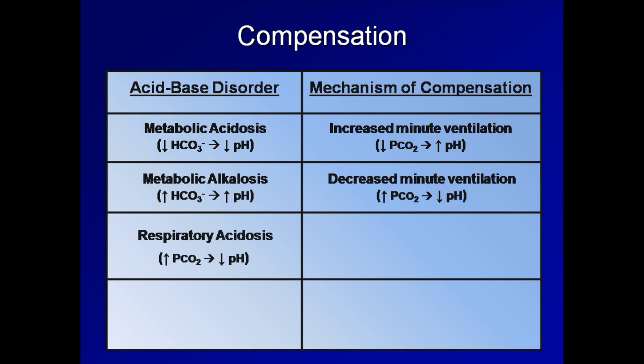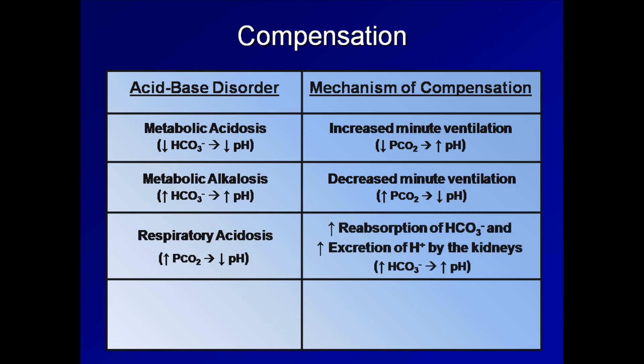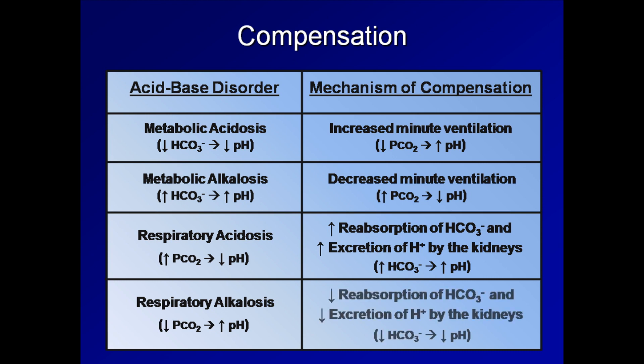In a respiratory acidosis, pCO2 is too high and the pH is too low. The body's metabolic response is to absorb more bicarb in the proximal tubule of the kidney and to increase excretion of hydrogen ions in the distal tubule, which increases serum bicarb and helps to increase pH. In a respiratory alkalosis, pCO2 is too low and the pH too high, so the kidneys reabsorb less bicarb and excrete less hydrogen ions.